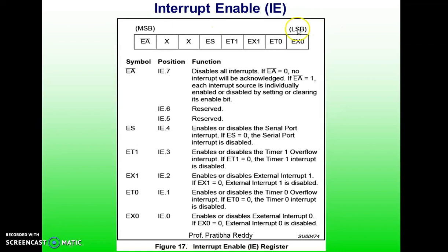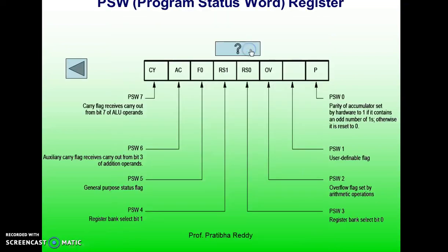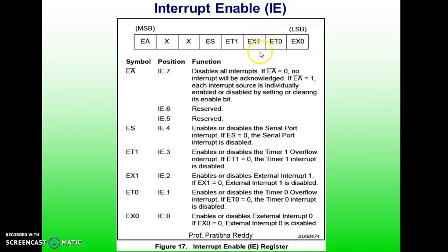An important point is that the IE register is a bit-addressable register. From the figure, it is noticed that bit D7 in the IE register must be set to 1 in order for the rest of the register to take effect. D6 and D5 are unused by the 8051 microcontroller, but D5 is used by the 8052. Bit D4 is set for serial communication interrupt, D3 for Timer Interrupt 1, D2 for External Interrupt 1, D1 for Timer Interrupt 0, and D0 for External Interrupt 0.